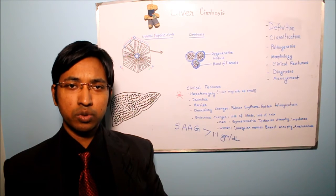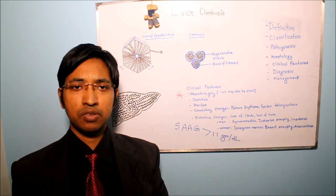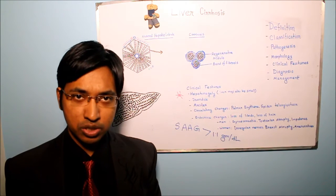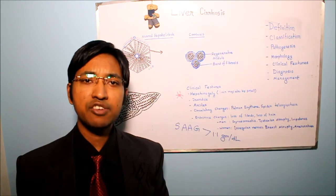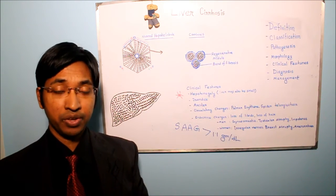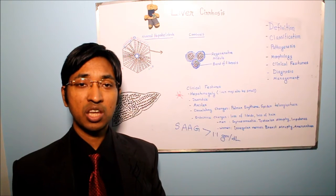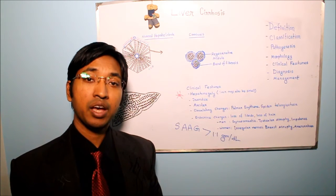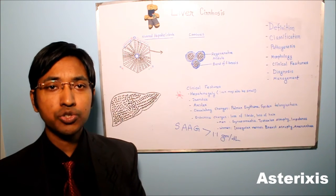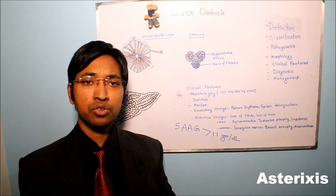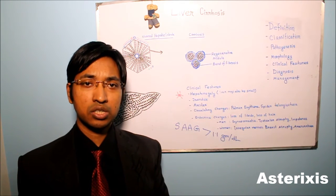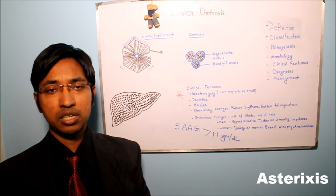The fourth clinical consequence of portal hypertension is hepatic encephalopathy. Hepatic encephalopathy is a spectrum of disturbance of consciousness, ranging from subtle behavioral abnormalities to severe confusion, coma, and even death. Clinical features include rigidity, hyperreflexia, and asterixis. Asterixis is also called flapping tremor — it is the non-rhythmic rapid extension-flexion movement of the head and hands seen in a patient of hepatic encephalopathy.